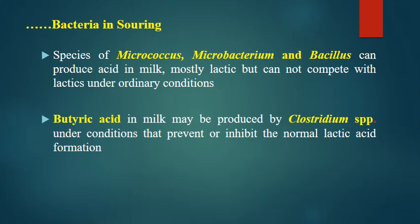Additional species causing acidity include Micrococcus, Microbacterium, and Bacillus species, which produce mostly lactic acid but cannot compete with lactics under ordinary conditions. Butyric acid in milk may be produced by Clostridium species, which is anaerobic and grows under conditions that prevent normal lactic acid formation — when no oxygen is available and lactic acid organisms cannot grow, Clostridium can produce butyric acid.